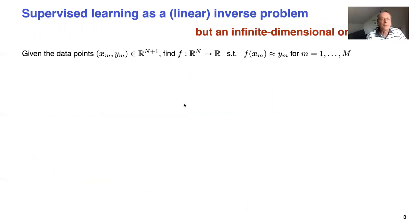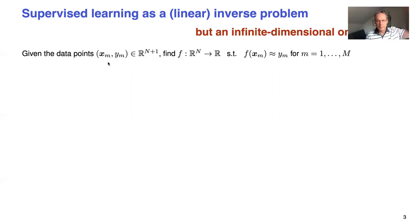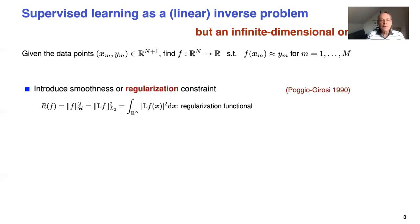Think of the problem as follows. We are given some inputs — examples of vectors, patterns — and ym would be the desired output. We're trying to learn a function that maps the domain of n-dimensional input vectors into R, which is y. We want to learn this function such that, at least on the examples we've given, f of x equals or is close to ym without overfitting.